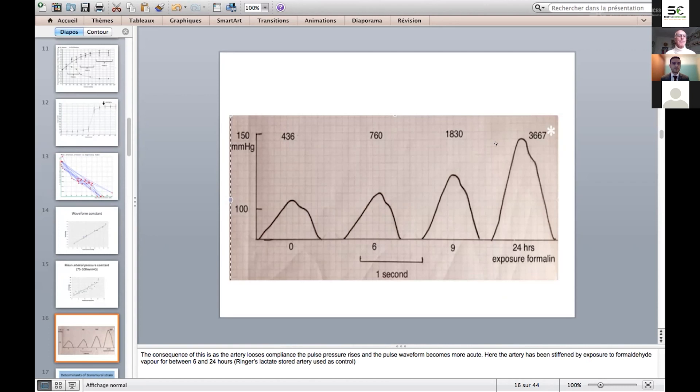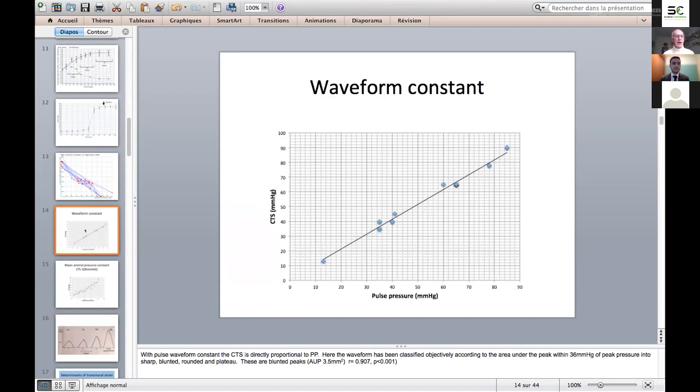That is rather interesting because when we look at what influences the stress across the arterial wall measured by our pressure probes, it's an absolutely linear correlation and a very close correlation—an R value of 0.97 between the transmural strain and the pulse pressure. To get that correlation, we need to use the same waveform. In this case, we've used a slightly blunted peak waveform characterized by an area under the peak of 3.5 little squares.